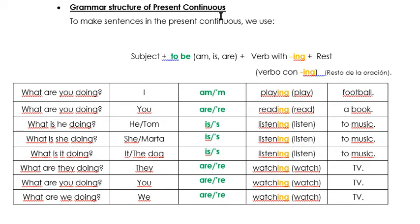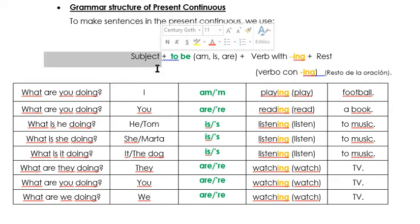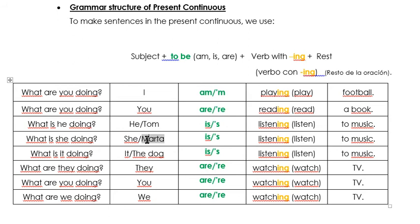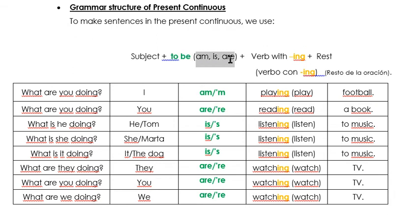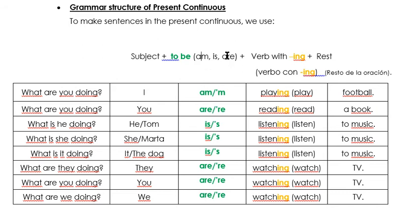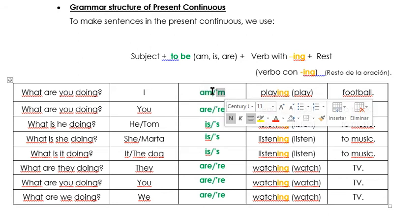The grammar structure of the Present Continuous — as all tenses, they follow a different grammar structure. With the Present Continuous we have to use the subject: I, he, she, Tom, Martha, the dog, they, you, we. Then the verb to be in the affirmative form — esta es la forma afirmativa. We can use am, is, or are depending on the subject. And you have the long form and the contraction, the short form.